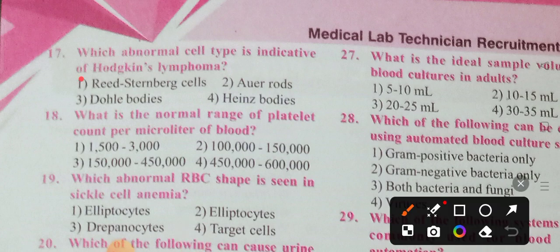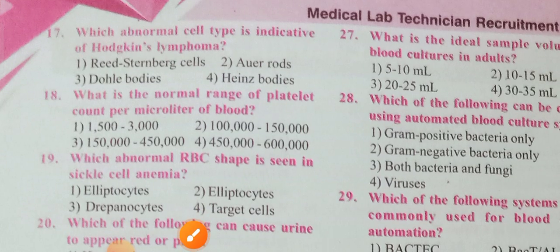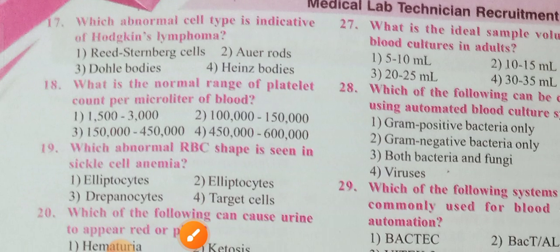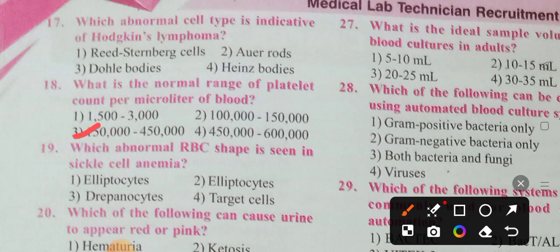Question 18: What is the normal range of platelet count per microliter of blood? Option 3 is the correct answer — 150,000 to 450,000.